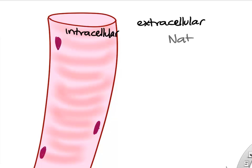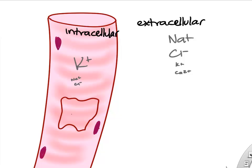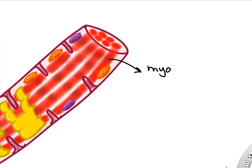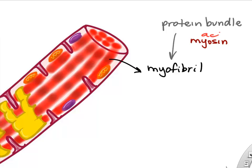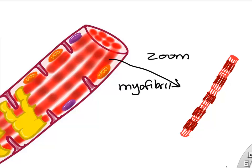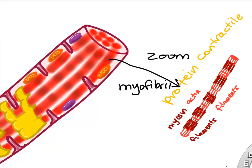Inside a muscle cell, we have intracellular and extracellular fluid with the same ions we've learned — lots of sodium chloride outside, lots of potassium inside. Muscle cells also have calcium stored inside the sarcoplasmic reticulum. The myofibrils are interior bundles of actin and myosin protein packed densely throughout the cell. If we zoomed in on one myofibril, we'd see that striation or banding pattern due to the thicker myosin proteins and thinner actin proteins — sometimes called filaments.